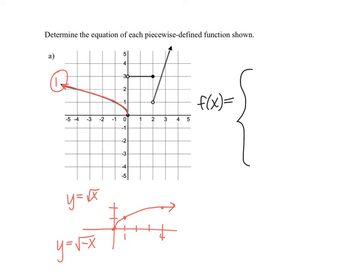It's also important to check for any vertical stretch or compression by looking at additional points. Back to the square root of x: the initial point is (0, 0) and the next point is (1, 1). Our graph also passes through (0, 0), and if we go left 1 and up 1, it passes through (-1, 1). Going left to -4, the y value is positive 2. Therefore, there has not been any stretch or compression, so the first function is the square root of negative x.